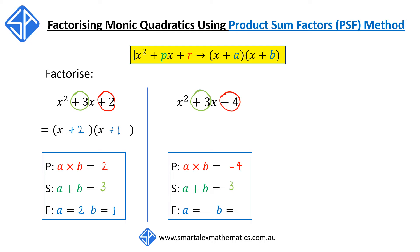F stands for factors. The two numbers a and b that satisfy these conditions are a equals positive 4 and b equals negative 1, since 4 times negative 1 gives negative 4, and 4 plus negative 1 gives 3. Once the values of a and b are known, the factorisation of x squared plus 3x minus 4 can be written as (x plus 4) times (x minus 1).